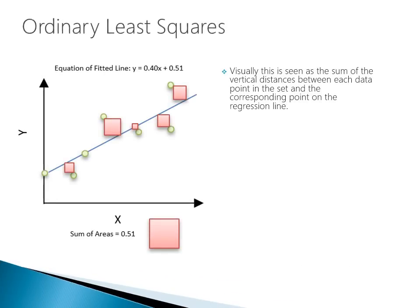Another way to visualize ordinary least squares is by looking at the distance between the regression line and each data point. We can draw a square from each data point to the line, and all these different errors produce squares of different sizes. If we add up all those square areas, we get a total sum. The goal of OLS is to find the regression line that minimizes the size of this total sum of squares — that's ordinary least squares in a nutshell.